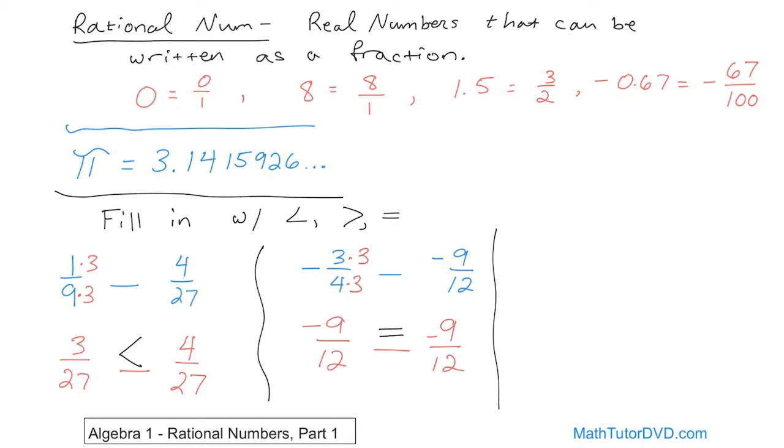And then the last one that we're going to do here is going to be 3 fourths, blank, 27 thirty-seconds. Same sort of thing. We want to get a common denominator. 4 times 8 is 32, so I'm going to take and multiply this fraction by 8. So 3 times 8 will have 24 over 32, and then over here it will be 27 over 32. So now which one's bigger? You can see that 27 thirty-seconds is larger, so the arrow's going to go this way. So in the original fraction, the arrow will go this way.